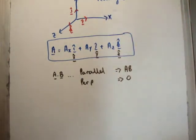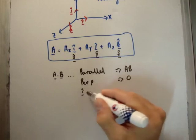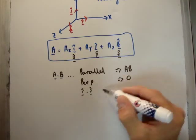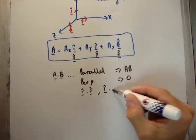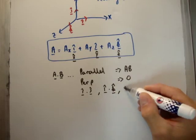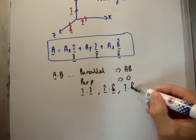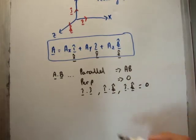Because of the way we're defining our unit vectors, that means i-hat dot j-hat, i-hat dot k-hat, and j-hat dot k-hat—the dot product of those is all going to be zero.